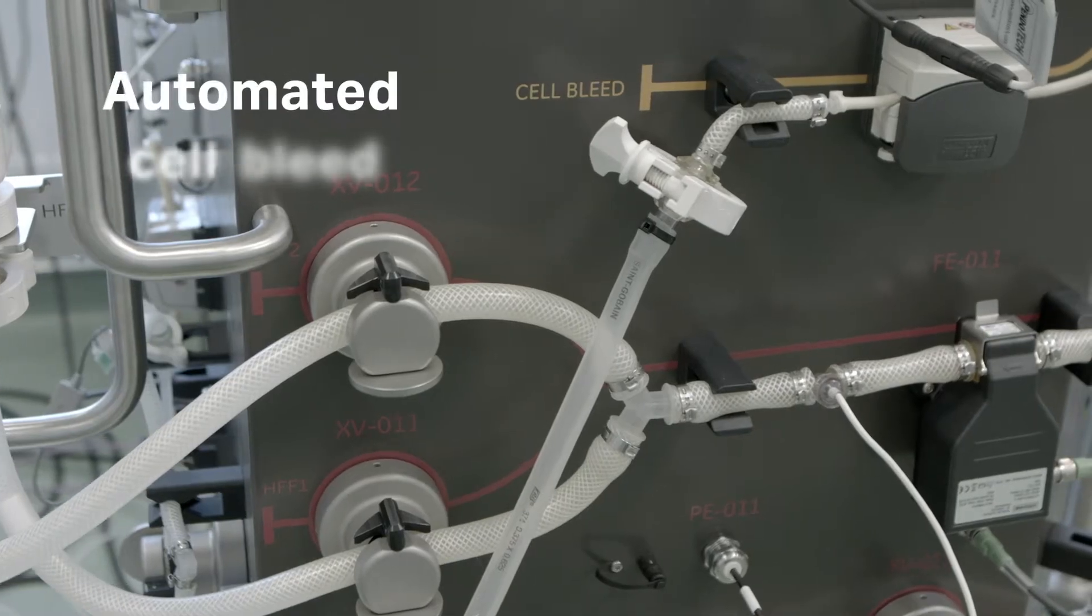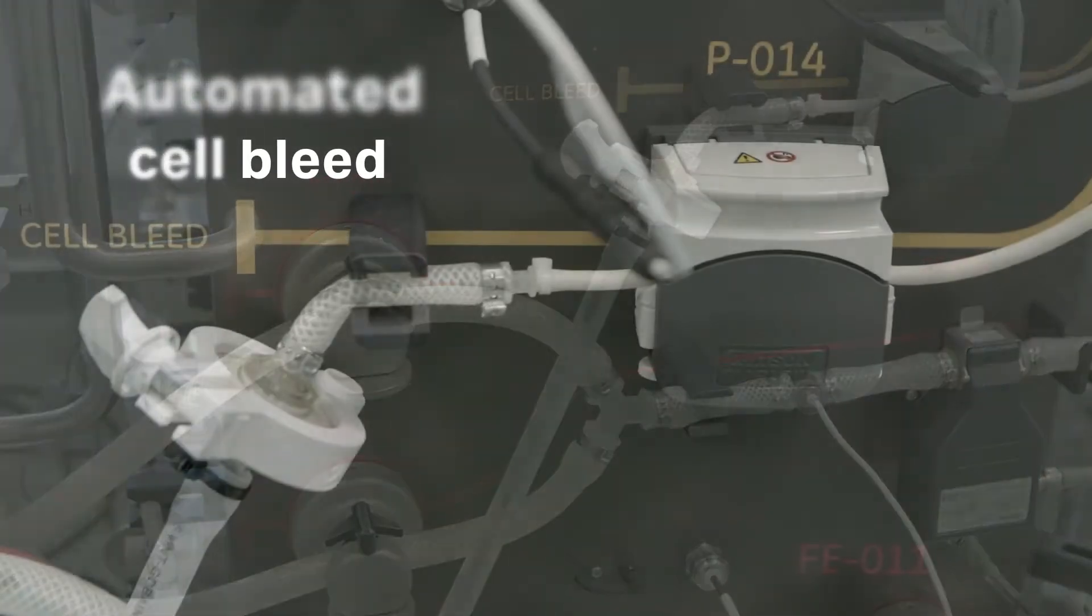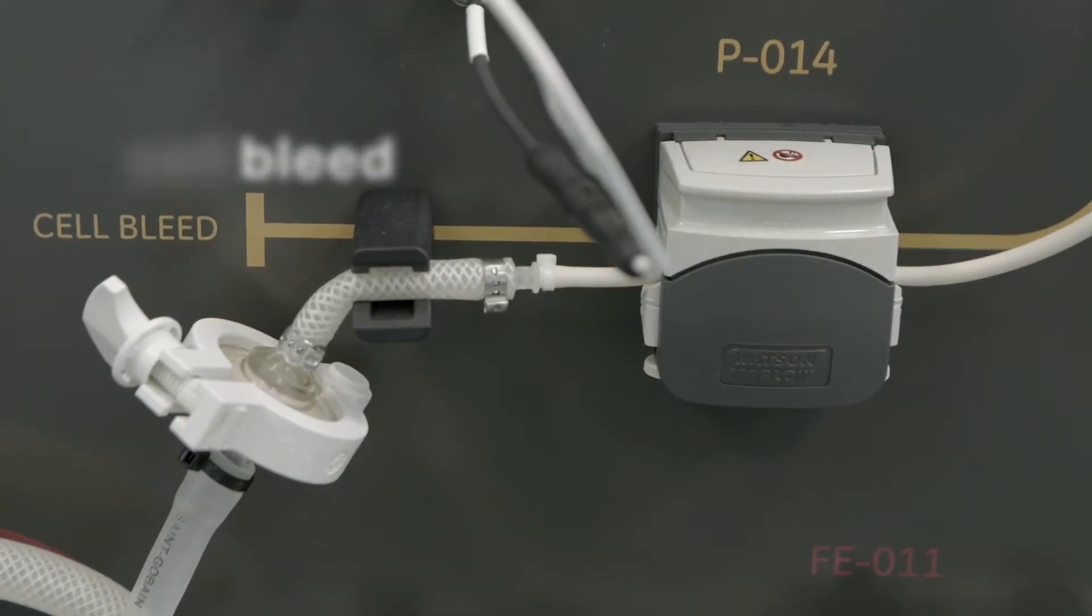To ensure continuous cell culture and maintain constant cell density, the APS automates cell bleed.